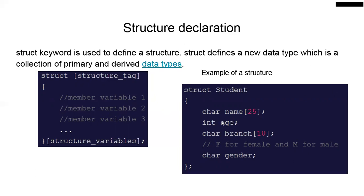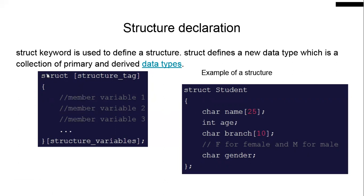You can declare a structure with the keyword `struct`, followed by a user-defined name for the structure. Inside you declare the member variables. The `struct` keyword defines a new data type which is a collection of primary and derived data types. A string is derived from character, so you can use an array of characters. It can consist of both primary and derived data types.